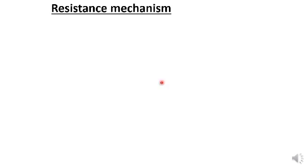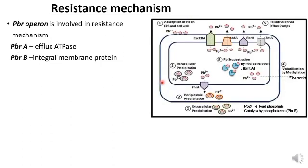Resistance mechanism to lead: the PBR operon is involved in the resistance mechanism. It contains two genes which are PBR-A and PBR-B. PBR-A encodes efflux ATPase and PBR-B encodes integral membrane protein.